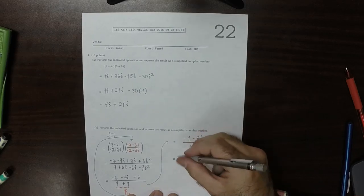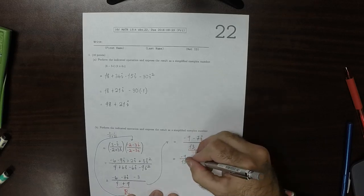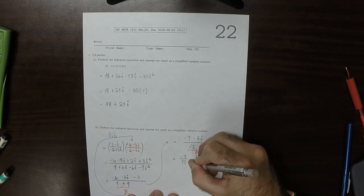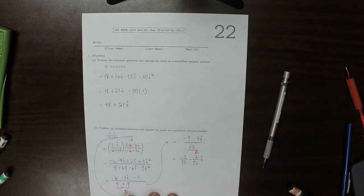That's negative 9 over 13, and then minus 7 over 13i. Let's go to the next one. Thank you.